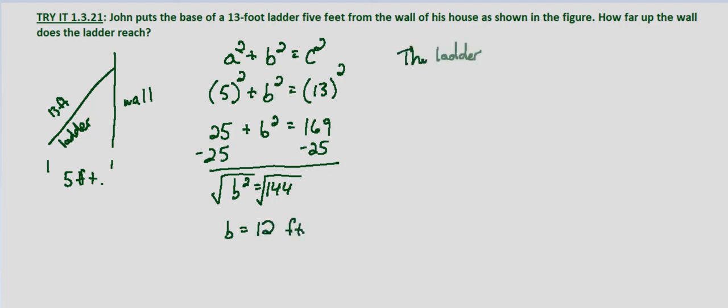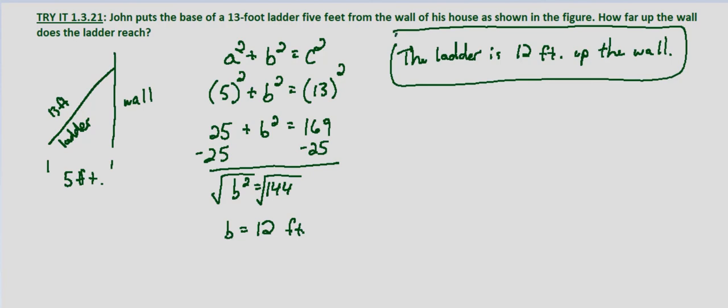The ladder is 12 feet up the wall. To check that, we verify that 12 squared plus 5 squared equals 13 squared. So 144 plus 25 equals 169. Yes, 169 equals 169. So with the 13-foot ladder against the wall, five feet away from the wall at its base, it will go 12 feet up the wall.